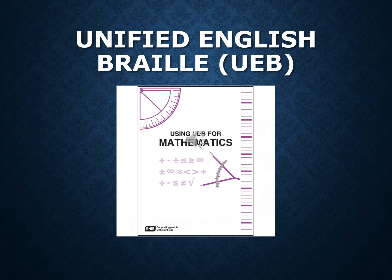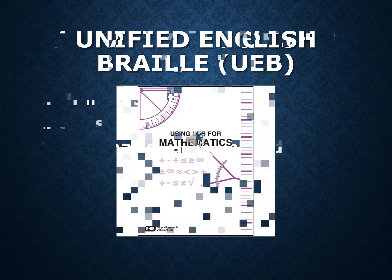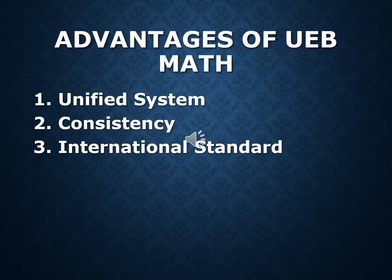First up, let's talk about the UEB math code. UEB stands for Unified English Braille. It's designed to be a single Braille code that covers both literary and technical content. Here are some advantages: first, it's a unified system, meaning you only need to learn one code for everything — this can make life a lot easier for students who are new to Braille. Second, it ensures consistency across all types of texts, so there's no need to switch codes when moving from reading a novel to solving math problems. Third, UEB is an international standard used in many English-speaking countries, which promotes a unified approach to Braille literacy.